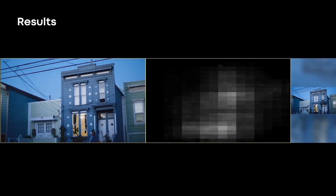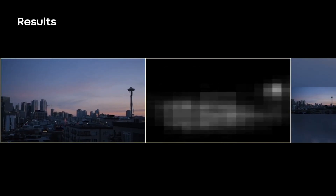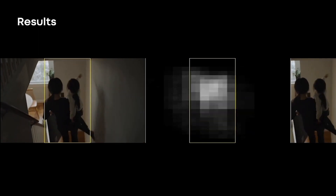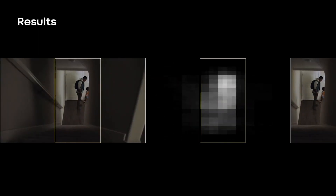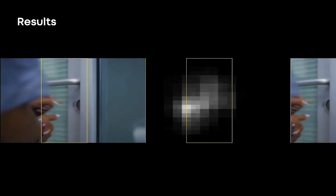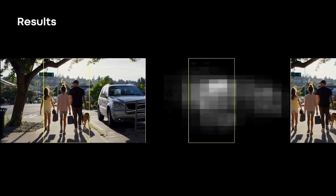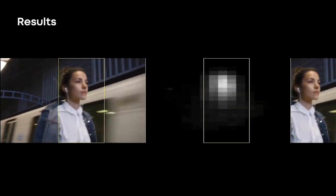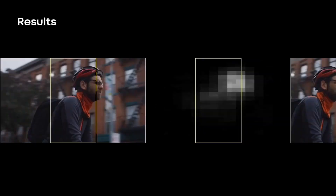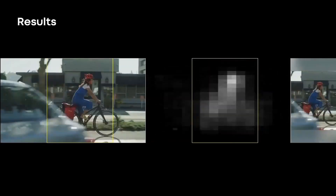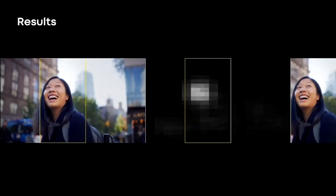Before we move on to the second part of this presentation, let us conclude with a quick demonstration. On the left is the original video, in the middle is the saliency map, and the yellow window is determined from the saliency map. You can see how the window size changes according to the pattern in the saliency map — it zooms in and out dynamically in order to capture the most important content.